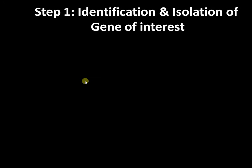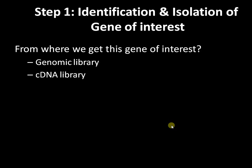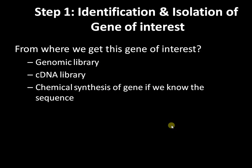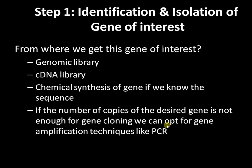Let us move into the first step: identification and isolation of the gene of interest. There are different resources for getting our gene of interest. These include a genomic library, a cDNA library, and chemical synthesis of a gene if we know the sequence. If the number of copies of a particular gene is very low and not sufficient for gene cloning, we can amplify it using the polymerase chain reaction (PCR), a gene amplification technique.